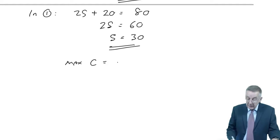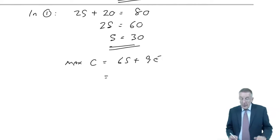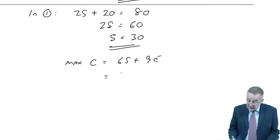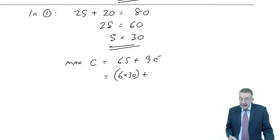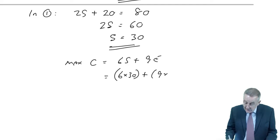The maximum contribution. Contribution. Now we had the equation before. Contribution is 6S plus 9E. Well, S is 30. E is 5.